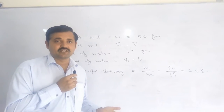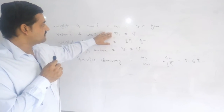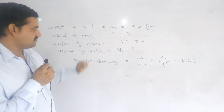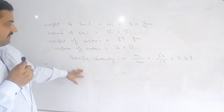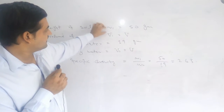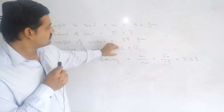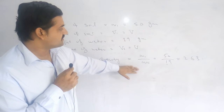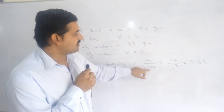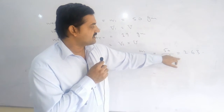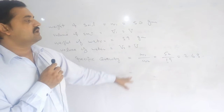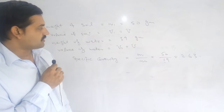You can see the volume of soil is capital V and the volume of water is also capital V — they are equal. If there is any change in these two values, then it will not be specific gravity. So using the formula — the weight of a given volume of substance divided by the weight of a given volume of water — we get 50 grams divided by 19 grams, which gives a value of 2.63. So the specific gravity of this soil is 2.63.